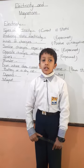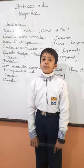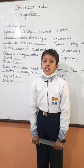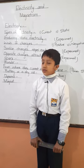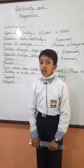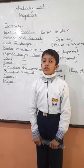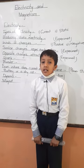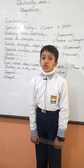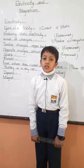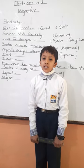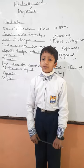Spark — when two oppositely charged bodies touch each other, a spark is produced. Thunder — due to lightning, the surrounding air becomes hot and it pushes the surrounding air with a great force, and a thunder is produced.